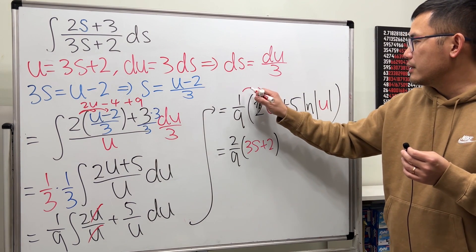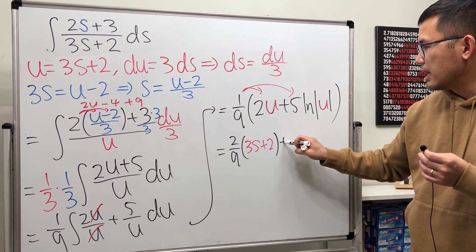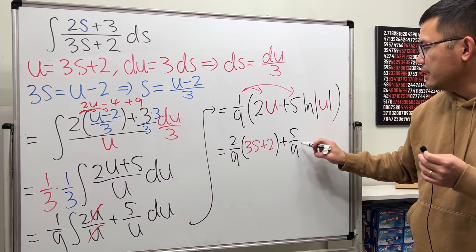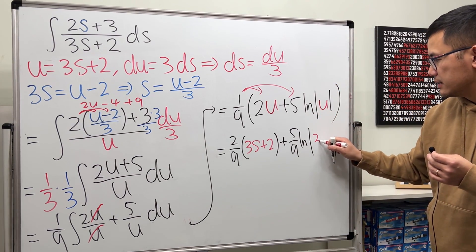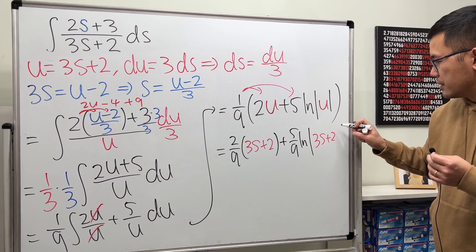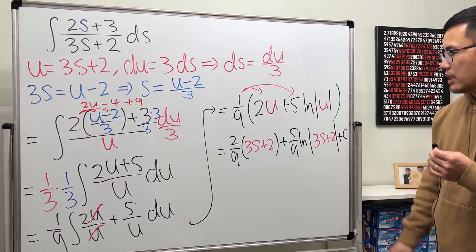And then take this, multiply by that. We get plus 5 over 9 ln absolute value. The u is 3s plus 2. And after that, yes, we can put down plus c.